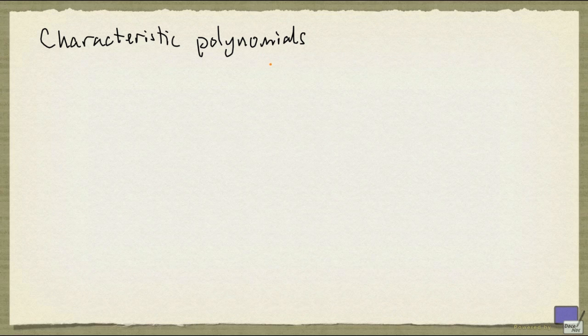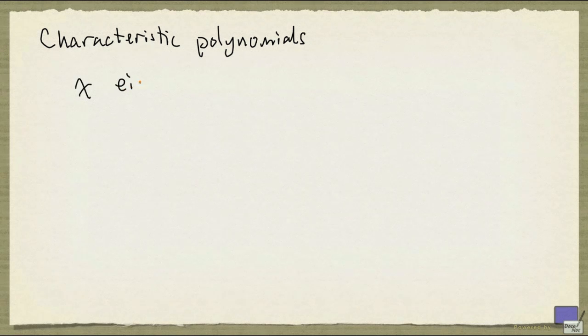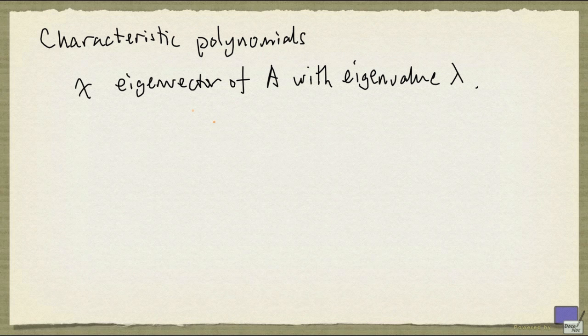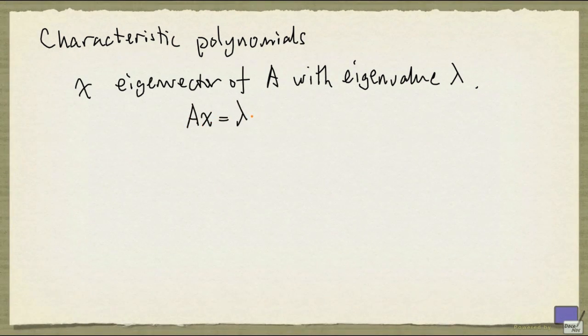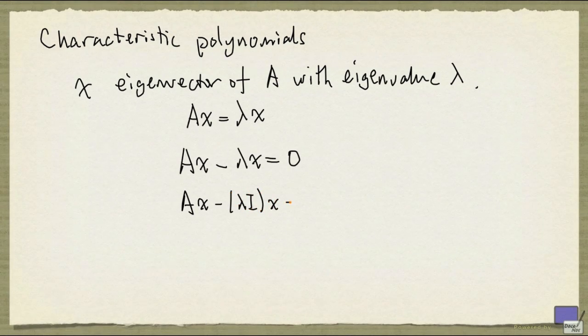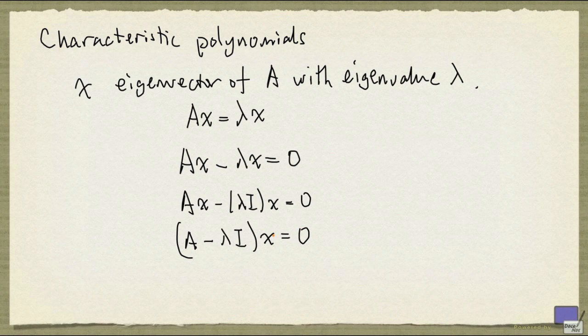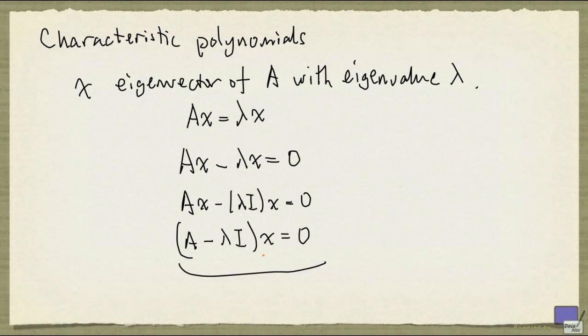Suppose that x is an eigenvector of A with eigenvalue lambda. That is, Ax is equal to lambda times x. But this can be rewritten as Ax minus lambda times x. But lambda times x can be written as lambda times I and then times x. So we can rewrite this as (A minus lambda I) times x equals 0. Now, because x is a non-zero vector, this tells us that x is a non-zero vector in the null space of A minus lambda I.